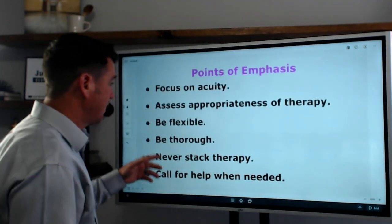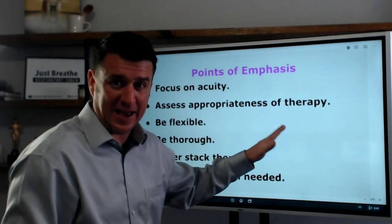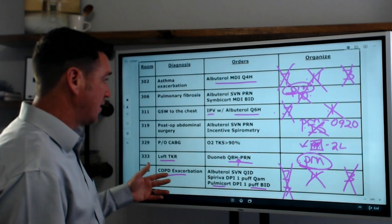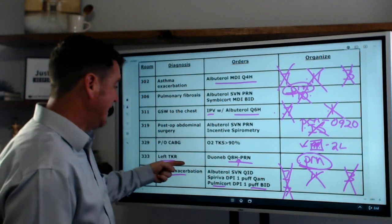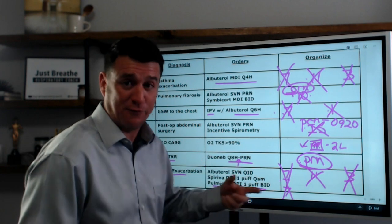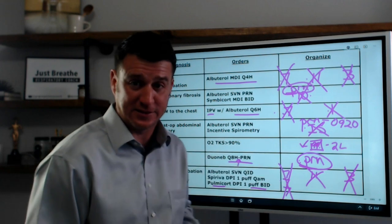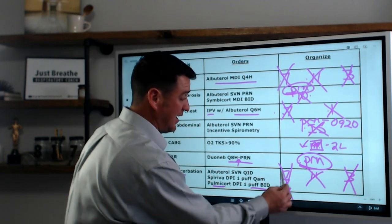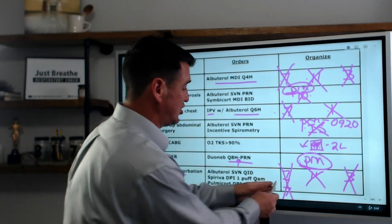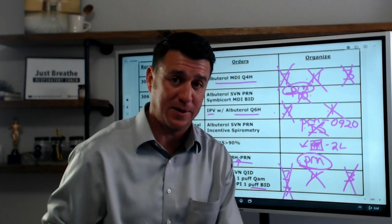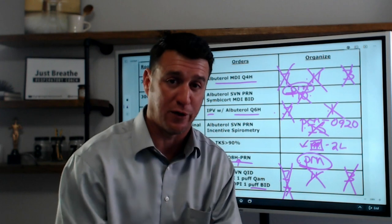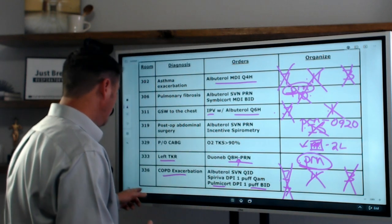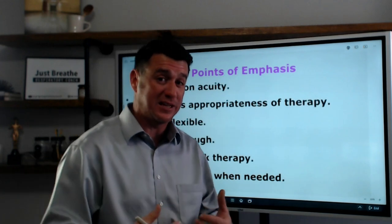Some key points to remember. First, all of those time estimates don't account for acuity. If the asthmatic has clear breath sounds but the COPD patient is wheezing bilaterally, I'm not starting with the asthmatic — I'm starting with the COPD patient. I set my day up based on acuity, seeing my sickest patients first and going down the list from there.